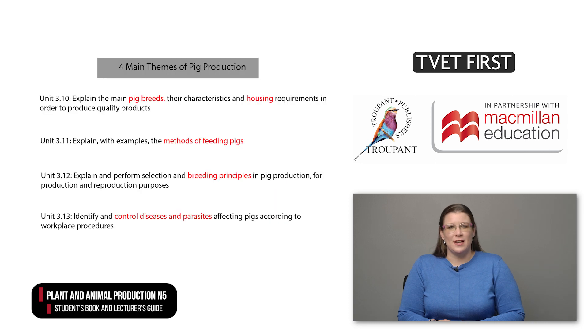Pig production has four main themes: different breeds and their housing, feeding methods, breeding principles, and the control and treatment of diseases and parasites.